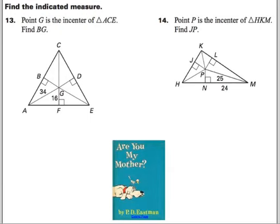So find the indicated measure. In this case, this piece right here, these are the perpendicular pieces. They are the radii of the inscribed circle. So if I'm trying to find BG, BG is going to be the same length as GF. So it's going to be 16.